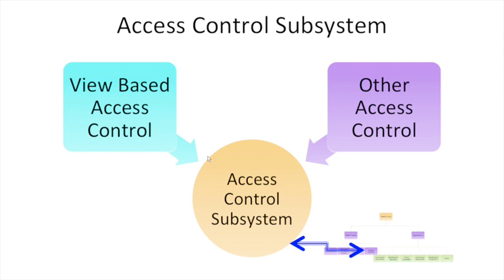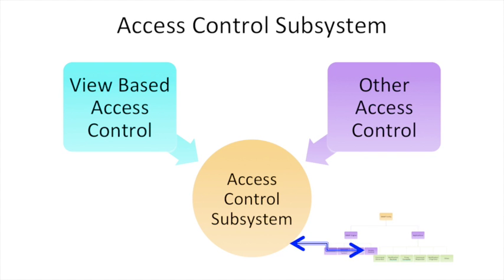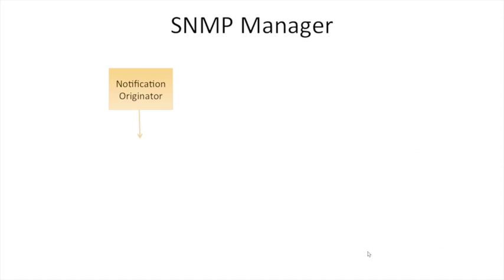For access control, a user must be defined, and then View-Based Access Control is applied along with other access control mechanisms. In the View-Based Access Control, authorization levels such as auth priv, auth no priv, and no priv privileges apply. These four pillars — dispatcher, message processing, security subsystem, and access control — cover the SNMP engine. Now let's see how the SNMP manager looks.